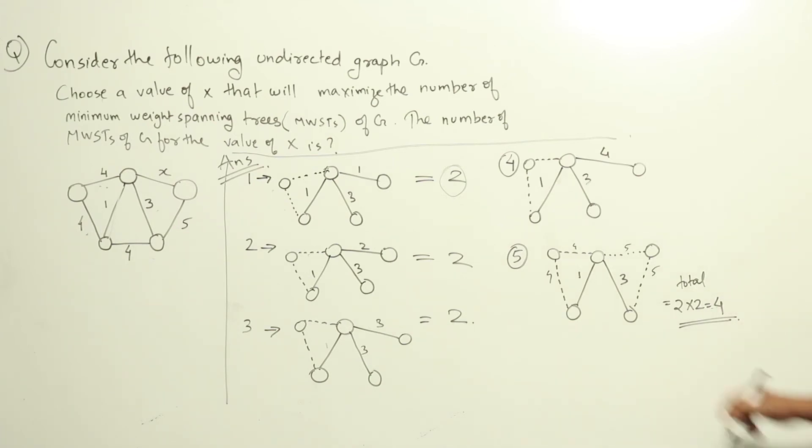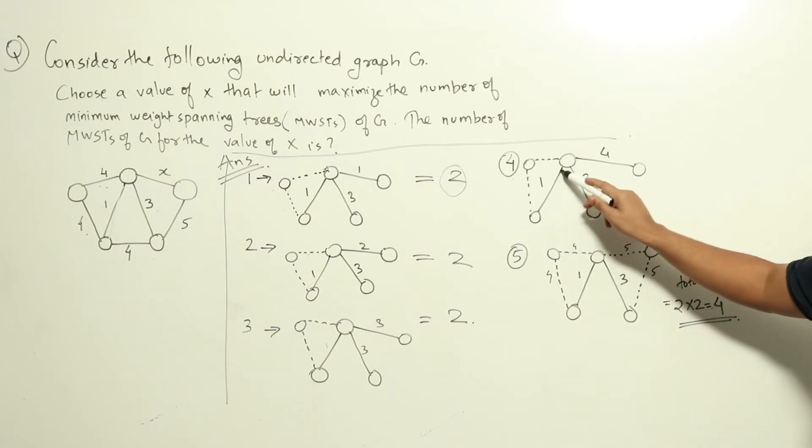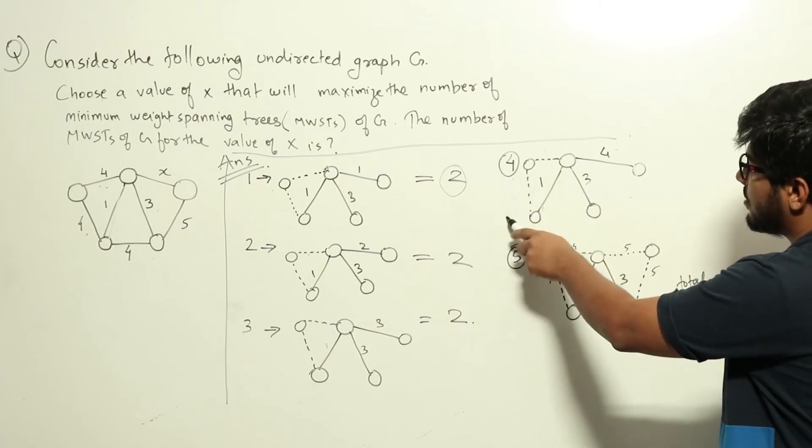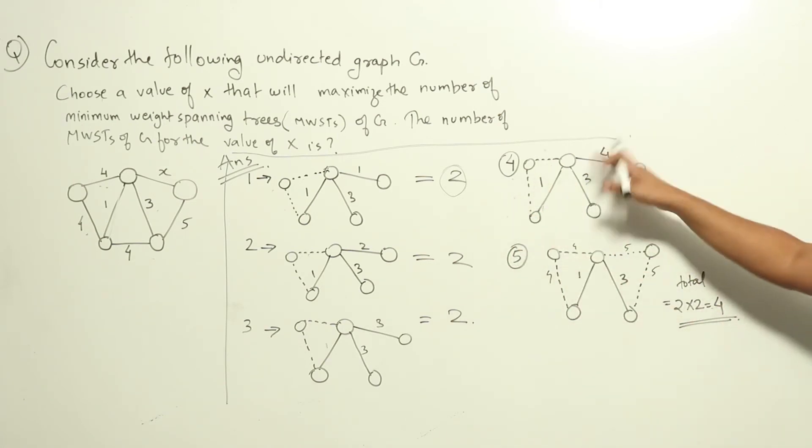Now let us try assigning 4. In this case we will be choosing this edge. It is 1. The second smallest is this edge. It will be 3. And then we have to connect this node. We have two options. We can choose either 4 or 5. 4 is the smallest one. We will be choosing 4 here. And then for this node again we can choose one of these two. It is again the same graph. We have only two possibilities.